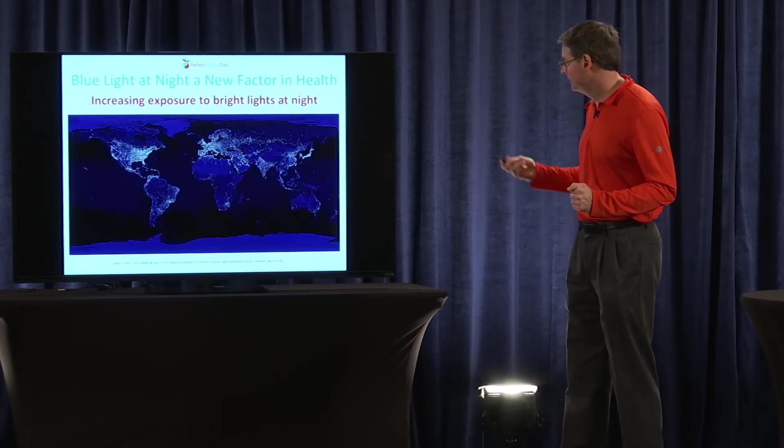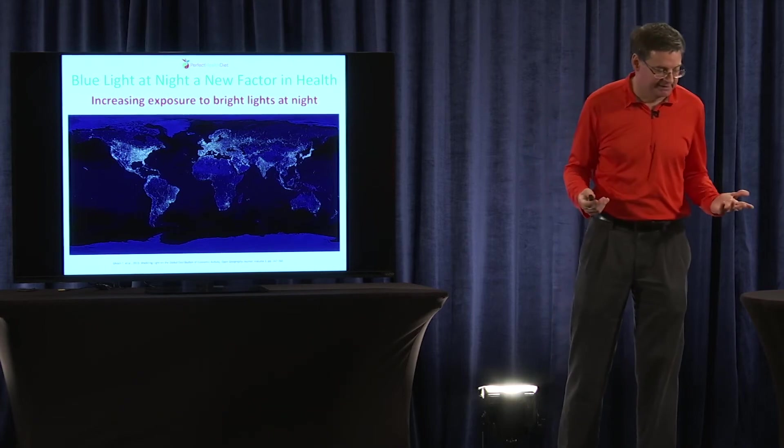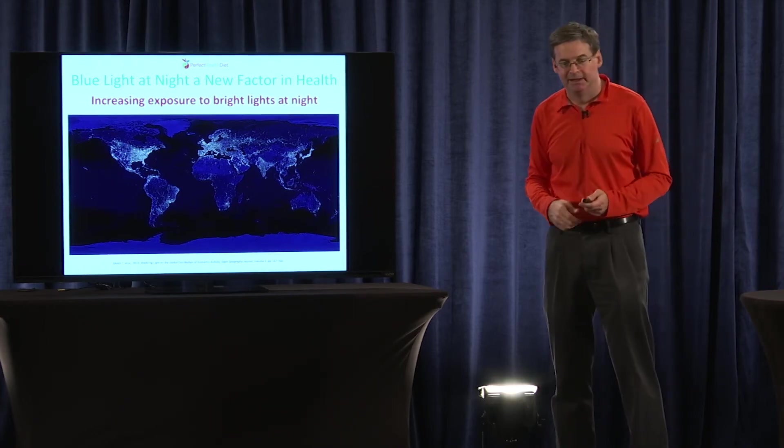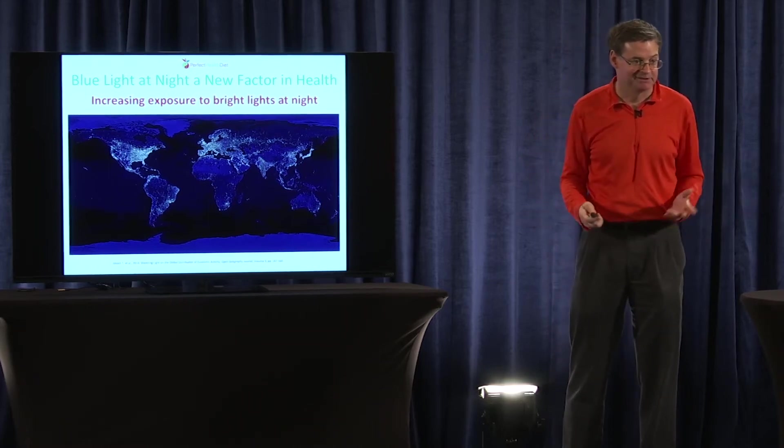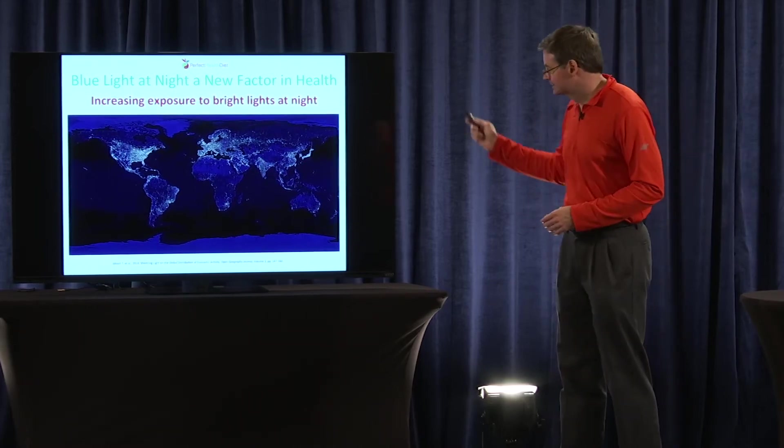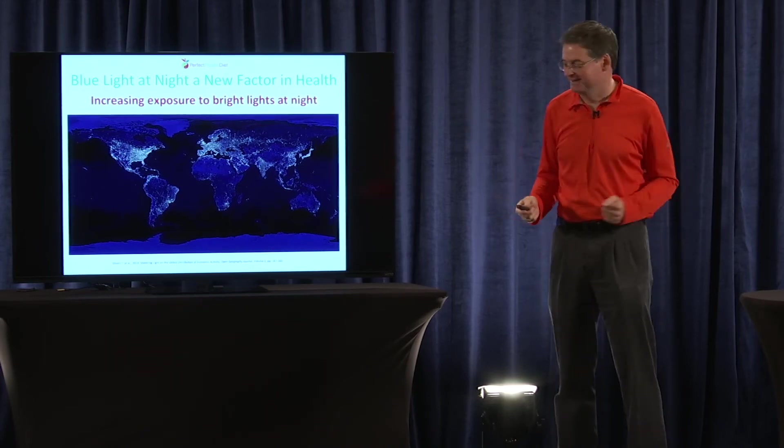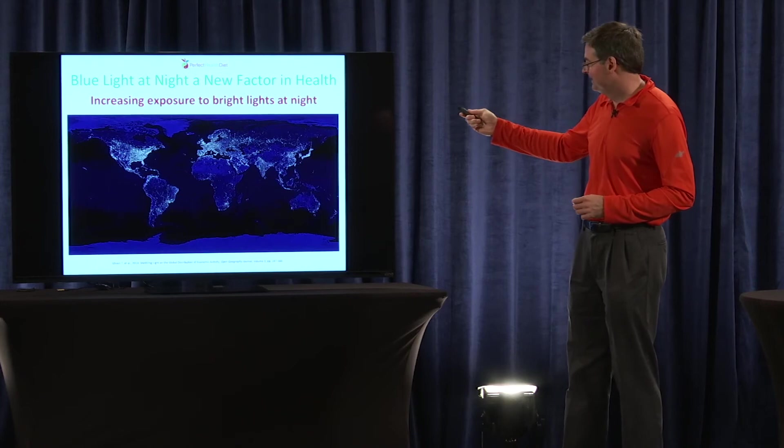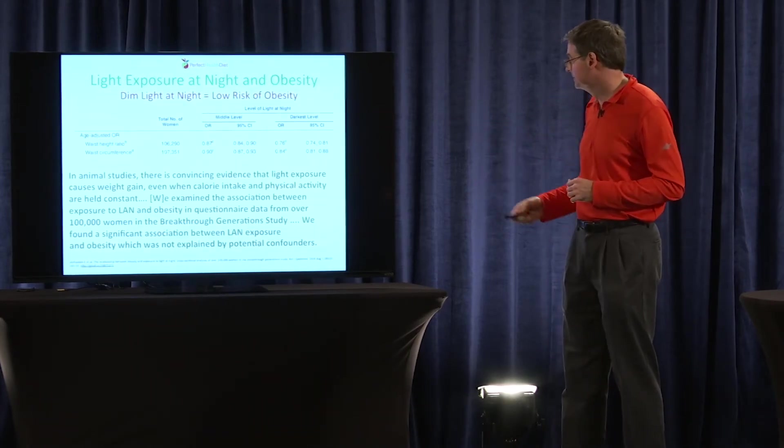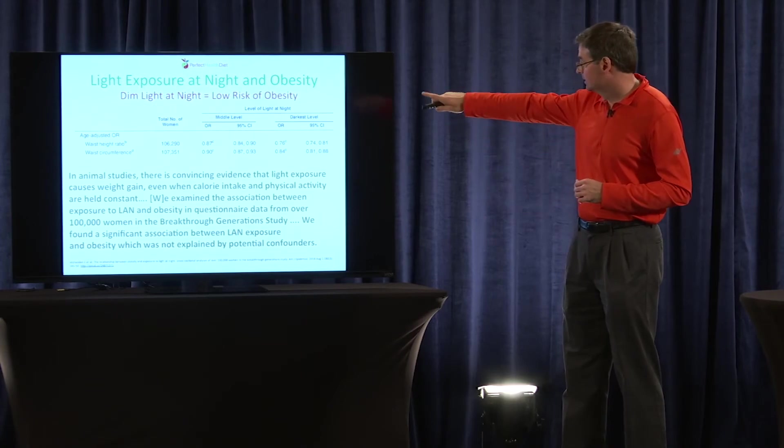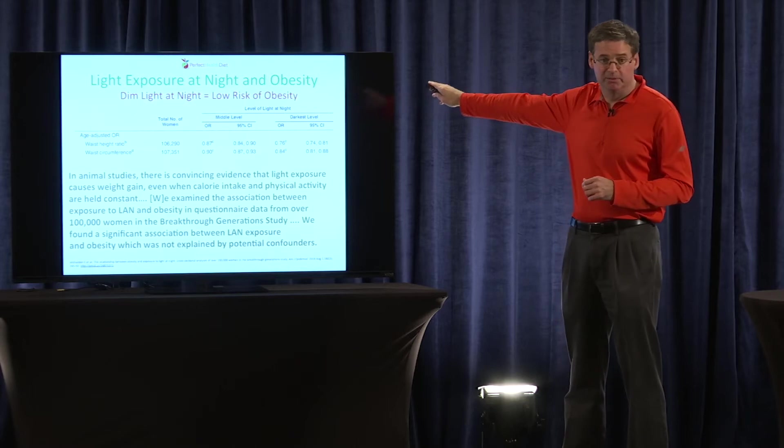So now it turns out, since Thomas Edison invented the light bulb, he's a great man in many ways, but he really damaged our health with that one. So we now have these light bulbs all around us at night. And it turns out that having all that light at night is probably disrupting our health. And so, for instance, light exposure at night is closely tied to obesity rates.